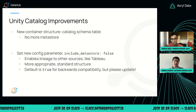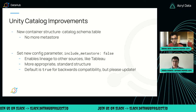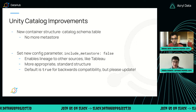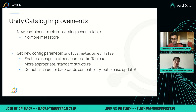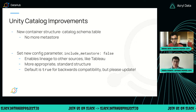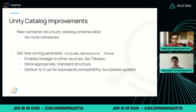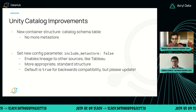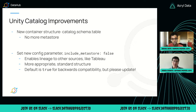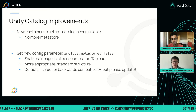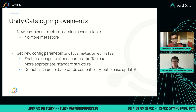This also allows us to get lineage to other sources like Tableau, which I'll show in a second. The most important thing to know here is that you should set include_metastore to false. This is what we're going to set as the default in the future. If you have stateful ingestion turned on, everything should work as normal, and you'll see this new structure in your data.